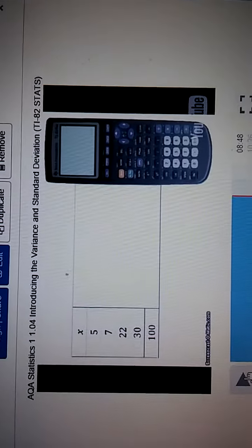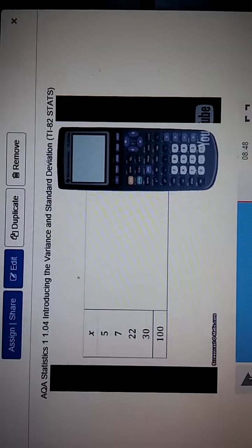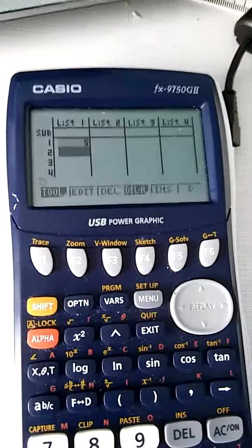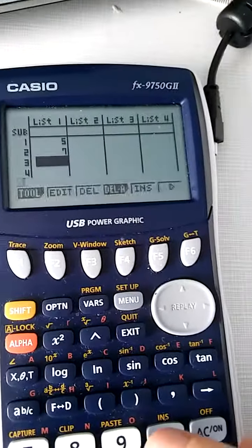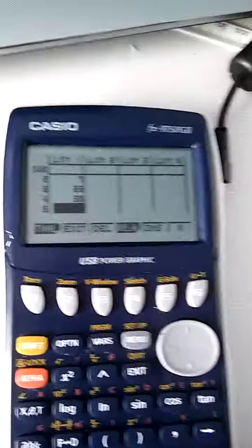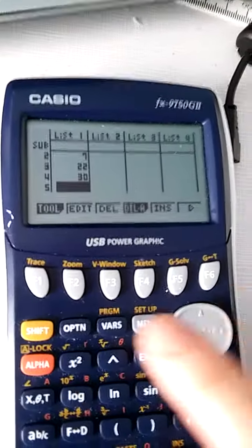So we need to put in the x values: 5, 7, 22, and 35.